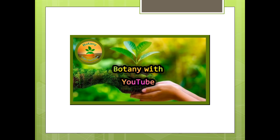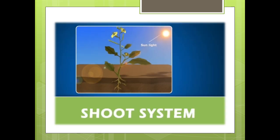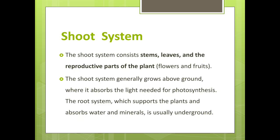Assalamu Alaikum, welcome to our channel Botany with YouTube. Today I am here, a PhD scholar, and I am going to present a topic: shoot system. The shoot system consists of stem, leaves, and reproductive parts of the plant, for example flowers and fruits. It generally grows above ground where it absorbs the light needed for photosynthesis. The other system is the root system, which supports the plant and absorbs water and minerals, and is usually underground.